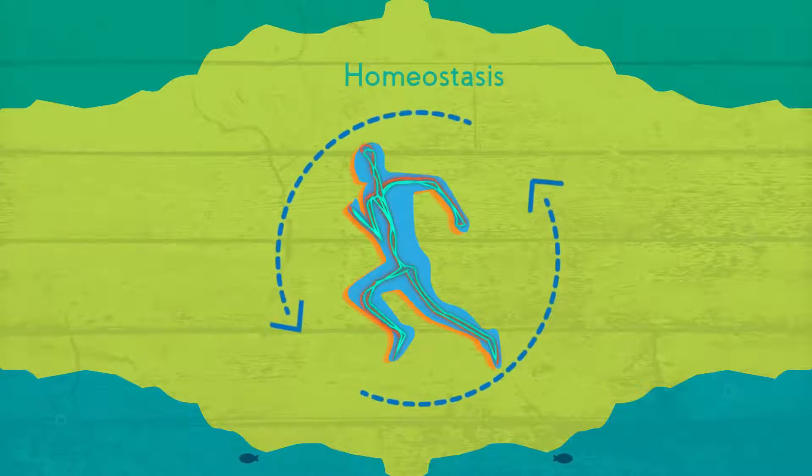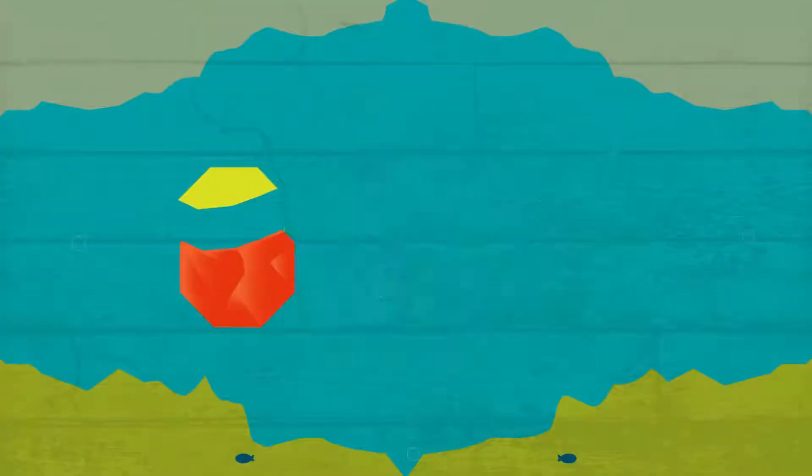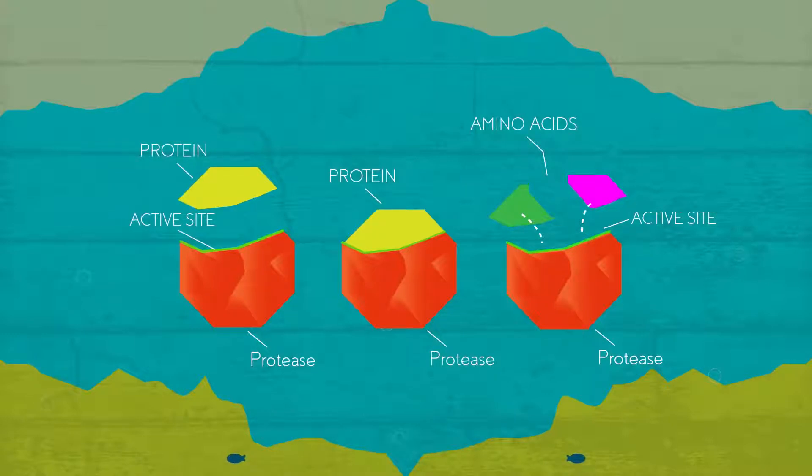For example, the activity of proteins which is not optimal can affect protein digestion in the body.